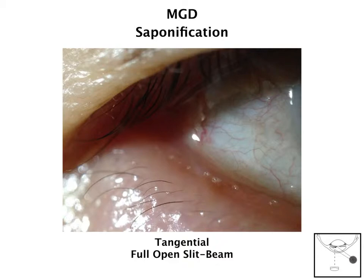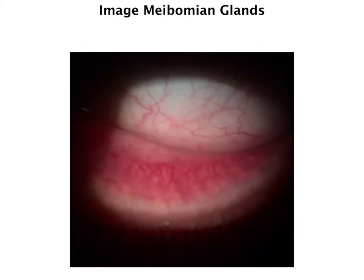Thinking of the meibomian glands, it's possible to image some of them with a coaxial direct illumination, as you can see in this photograph. If you look closely, you'll notice the white lines in the palpebral conjunctiva that run perpendicular to the lid margin — those are the meibomian glands. This is useful when we're looking at meibomian dropout in MGD and tracking its progression over time.